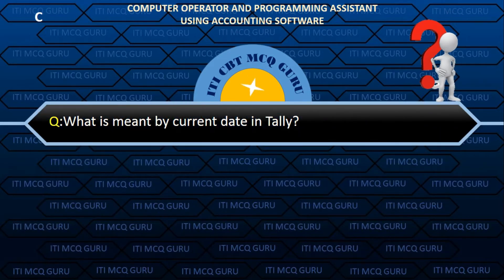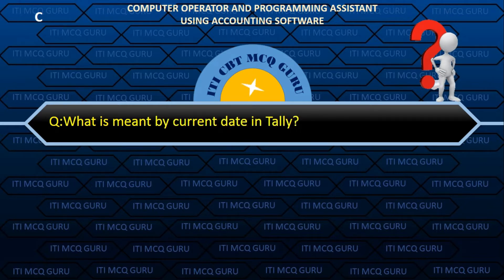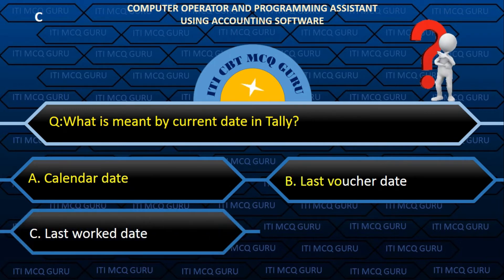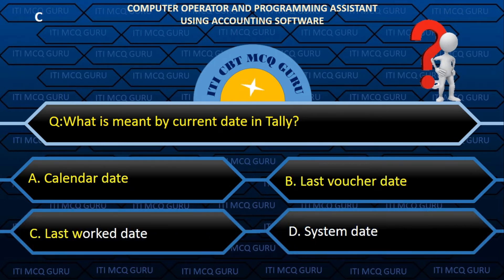What is meant by current date in Tally? C. Last worked date.